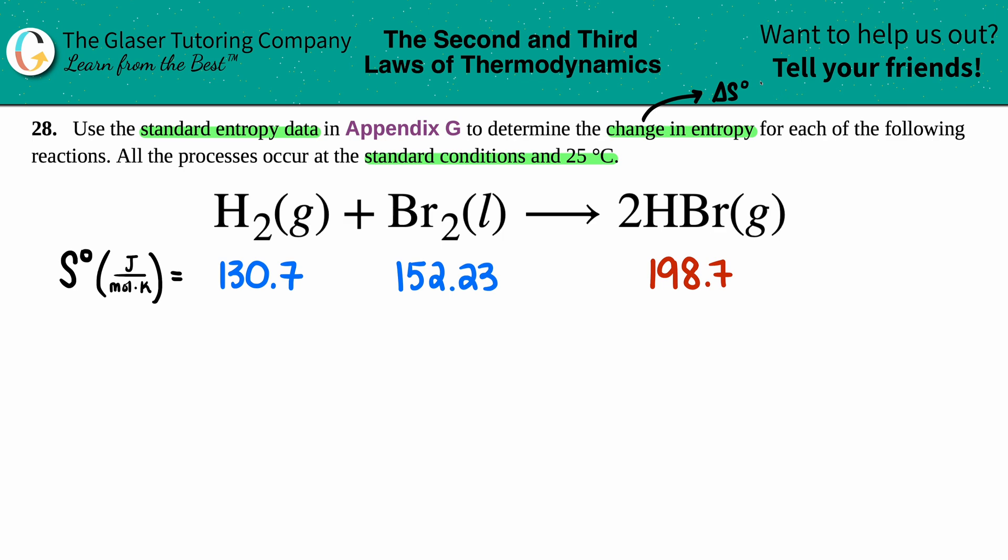What we're talking about is randomness, the randomness of molecules. Now I did go to the back of the book to find out what the S values are for each individual component. We have H₂ gas, which has an S value of 130.7, Br₂, which is 152.23, and HBr, which is 198.7. How are we going to utilize these numbers to find out what the overall change in entropy is?